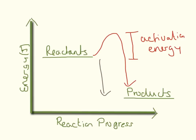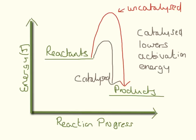Or like the activation energy you need to actually sit down at your desk and start revising — sometimes that can be the hardest bit. The other graph you need to be familiar with is one that has a big hump and a little hump. The big hump in red is our uncatalyzed reaction, and the little hump in brown is our catalyzed reaction.